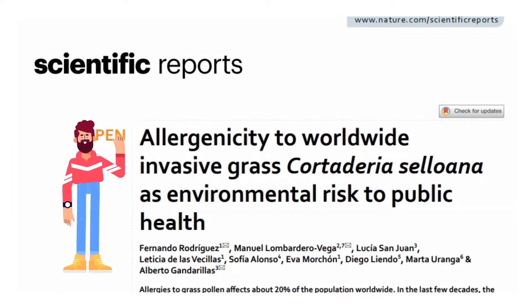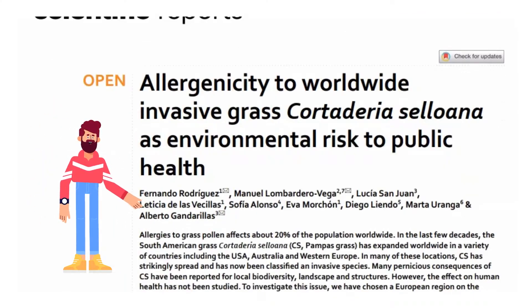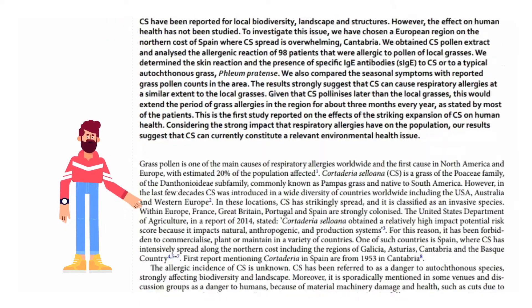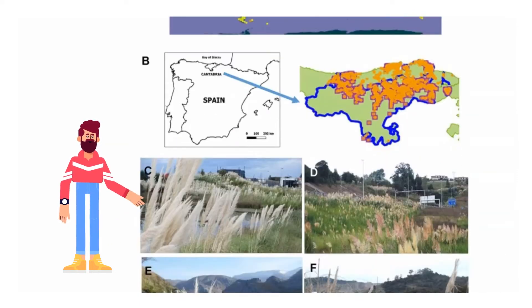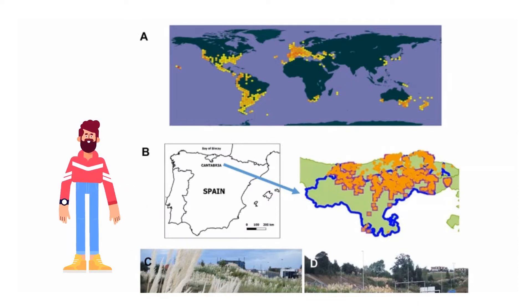Grass pollen is one of the main causes of respiratory allergies worldwide, and the first cause in North America and Europe, with an estimated 20% of the population affected. Cortaderia selloana is a grass of the Poaceae family, of the Danthonioideae subfamily, commonly known as pampas grass and native to South America.